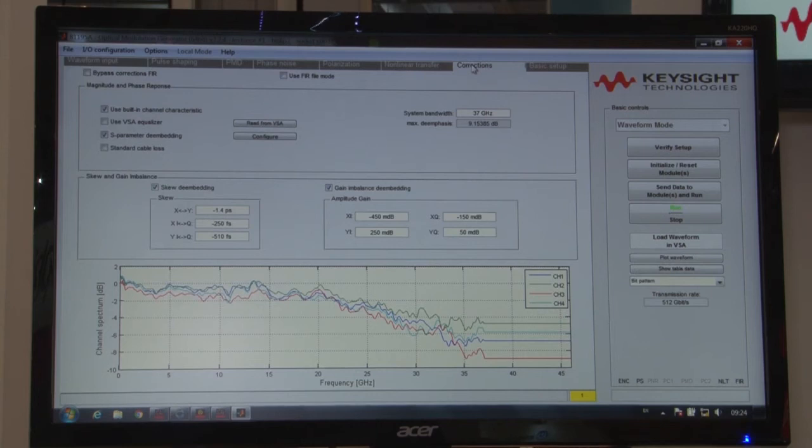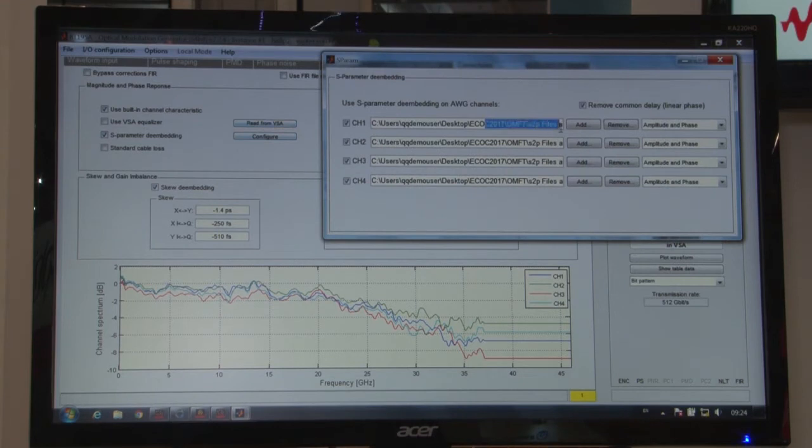In the corrections tab I'm able to apply corrections that are already built inside the arbitrary waveform generator to get to a better signal quality. I can use S-parameter de-embedding should I have components inside my test setup that I would like to de-embed. I'm using this here to compensate for the frequency response of my optical transmitter.